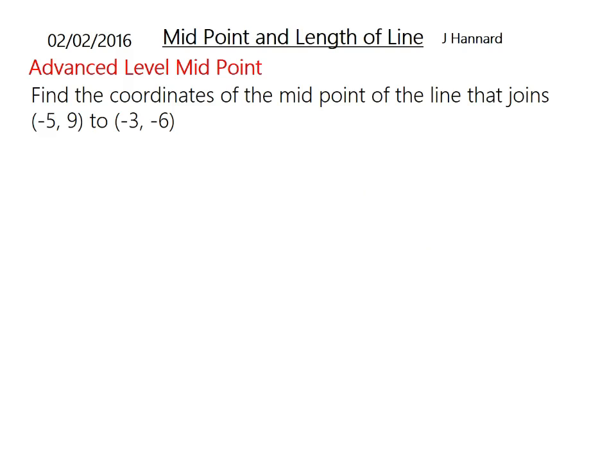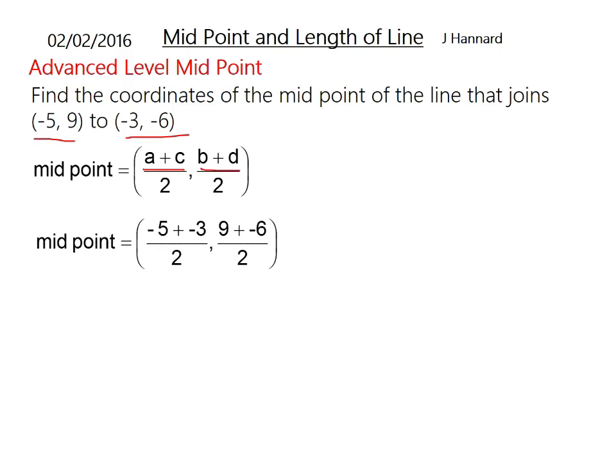Here is another one. Find the midpoint of the line that goes through minus 5, 9 and minus 3, 6. Midpoint formula: average of the X's, average of the Y's. Put in your numbers: minus 5 plus minus 3 over 2 comma 9 plus minus 6 over 2. That cancels down to minus 4 comma 1.5. That is pretty much midpoint. Just learn the formula and think about that.